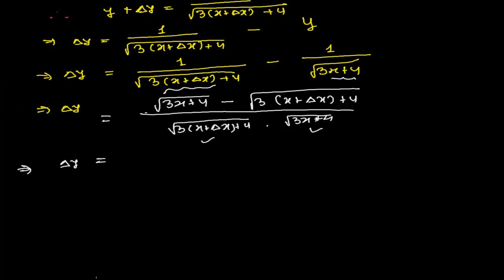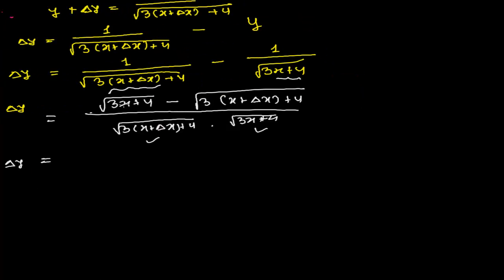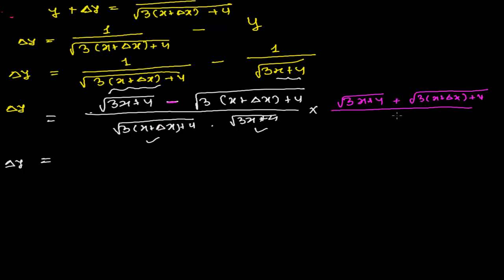Now δy has a square root term minus another square root term. For this type of problem we rationalize by multiplying numerator and denominator by the conjugate — changing the minus to plus — giving: [√(3x+4) − √(3(x+δx)+4)] times [√(3x+4) + √(3(x+δx)+4)] all divided by the denominator times the same conjugate.